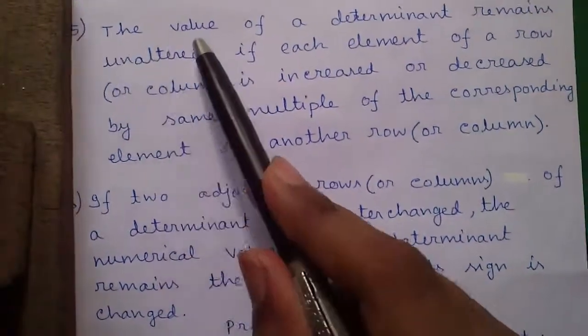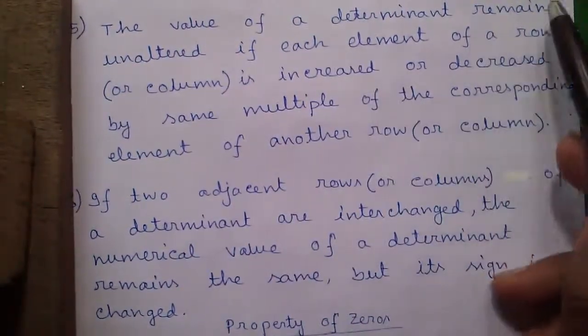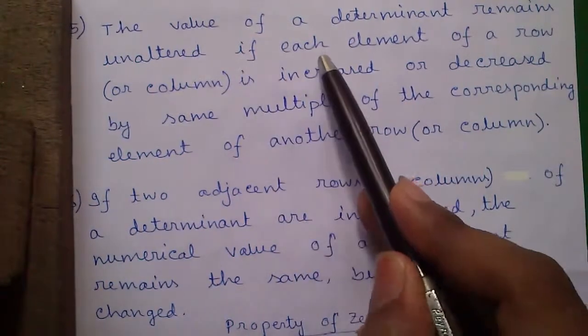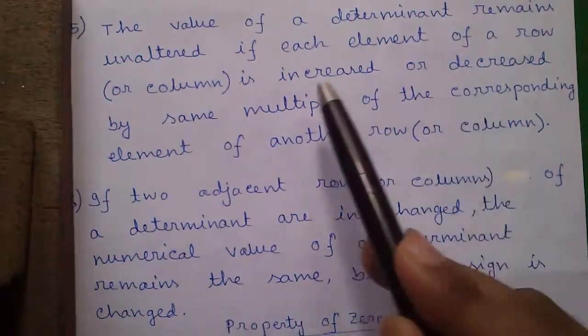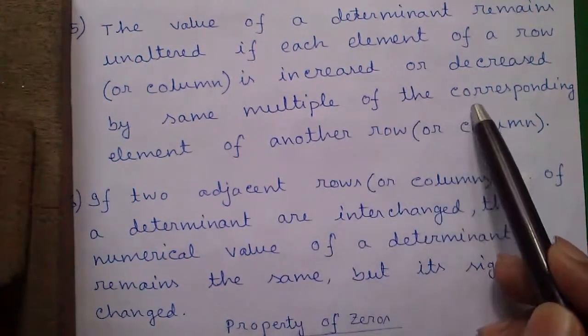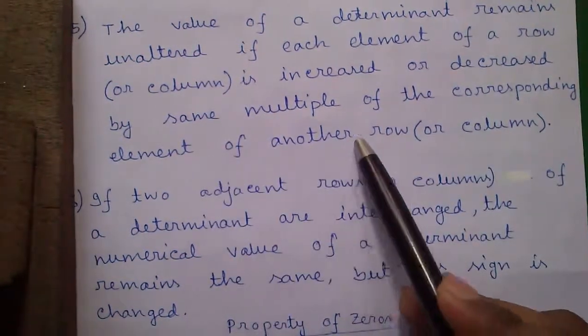Fifth property: the value of a determinant remains unaltered if each element of a row or a column is increased or decreased by the same multiple of the corresponding element of another row or column.